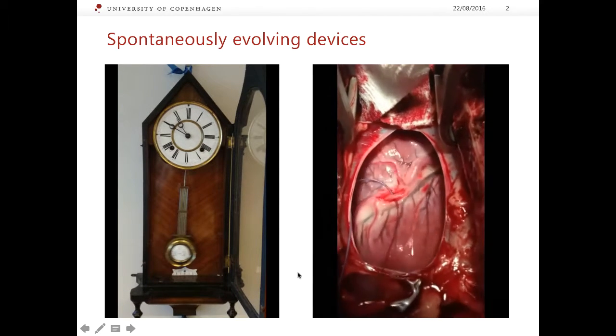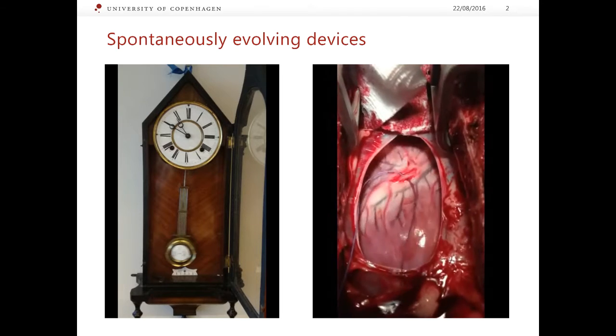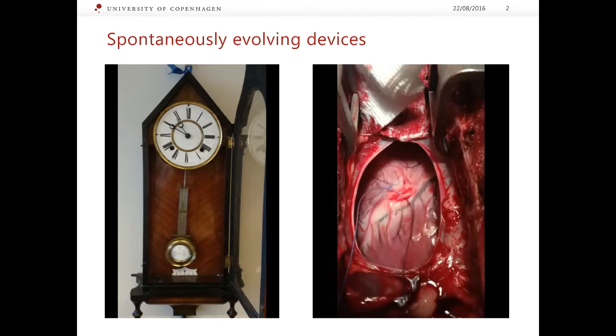Now take a biological system. For example, this is the heart of a 50 kg Danish land-race pig.